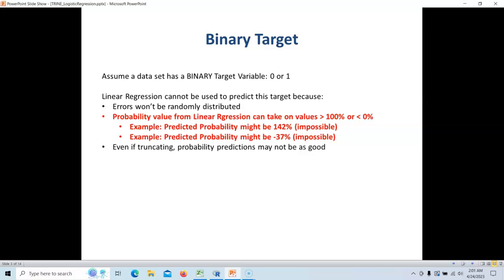You can, in theory, truncate those answers. So you could do something like if you ever get an answer like 142 percent, maybe you truncate it down to 99 percent, or anything less than zero, you truncate it to 1 percent. You can do that, but that's not necessarily a desirable thing to do.